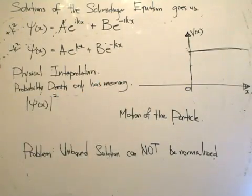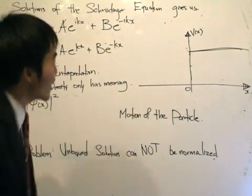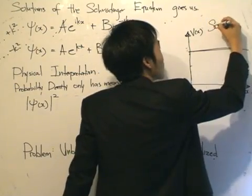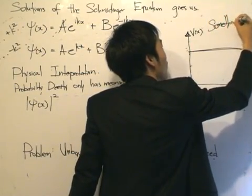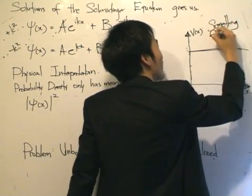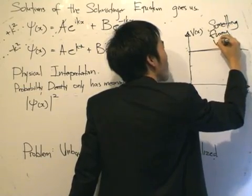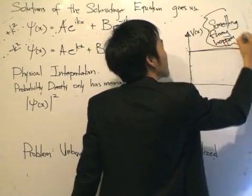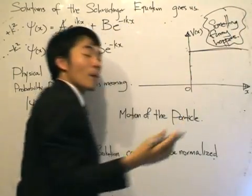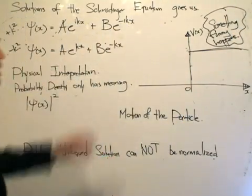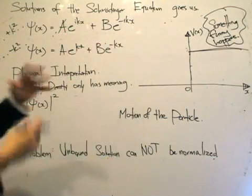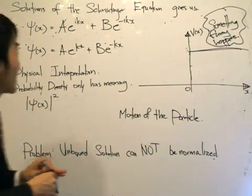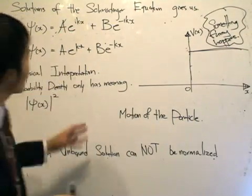Given this potential, whenever the potential changes, we should prepare ourselves and know that something interesting happens at that point. Something always happens where the potential changes. Based on the problem, at least we're ready that something happens there. We can also eliminate a solution based on these conditions.